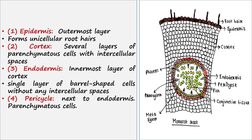Next to the endodermis you can see the pericycle layer. You can find some yellow cells in the pericycle. These are also parenchyma cells.